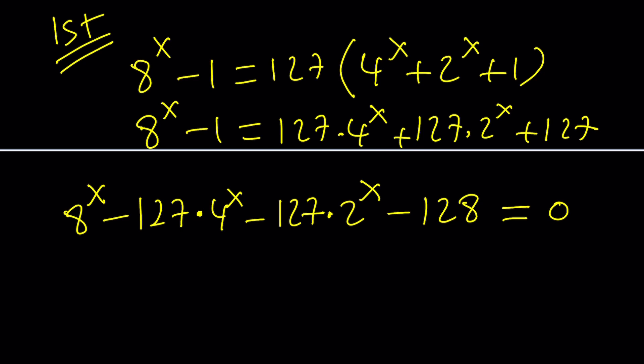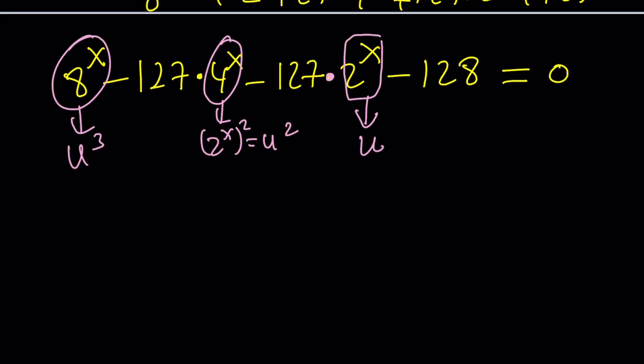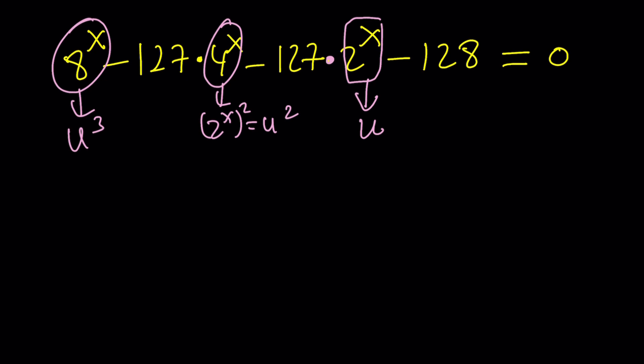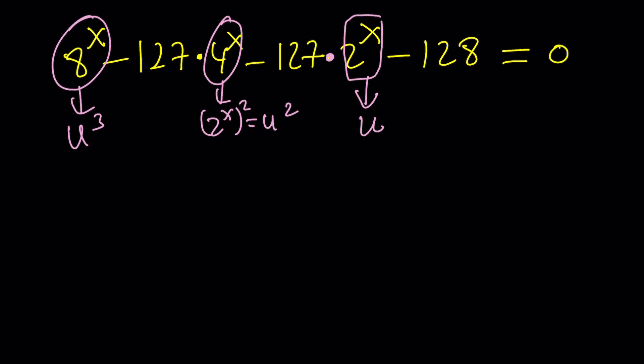So I'm going to go ahead and use substitution at this one because this is definitely calling for substitution. So if I call this one, I don't know, t, u, whatever, let's call, let's use u this time. Then this will become, notice that it's 2^x squared, which is u squared, and this will be u cubed. And then the substitution just turns this into a polynomial equation, specifically a cubic one.